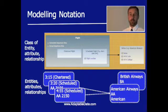The subtypes are supported with boxes in boxes. So you can see from this example I've got four entities, the class of entity at the top here. We've got Flight and we've got two subtypes of Flight: Chartered flights and Scheduled flights.